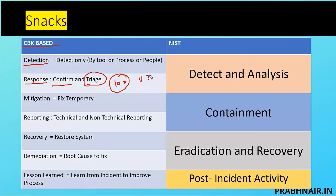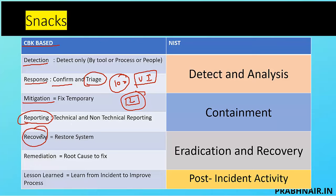For example, if one system is infected with a virus but has no data, versus another system infected with ransomware holding sensitive data — we mitigate the more critical one first by isolating it from the network to reduce further damage, then inform management. Then we restore the backup and bring the system back to its prior state. The thin line difference: mitigation is a temporary corrective action — like isolating yourself from family if infected with COVID — while recovery is the full treatment, like 14 days of recovery.